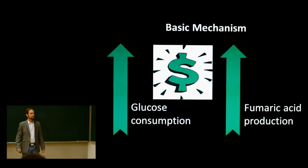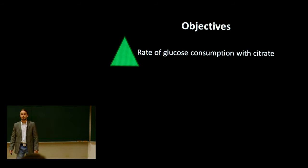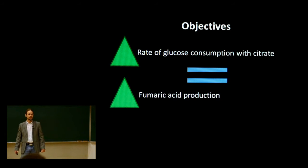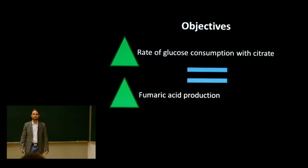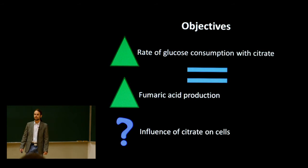The objectives of this study were to increase the rate of glucose consumption with the addition of citrate, and hopefully as a consequence to increase the rate of fumaric acid production. Finally, we wanted to describe the influence of citrate on the cells.